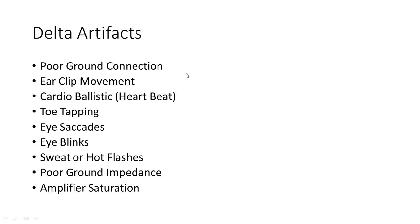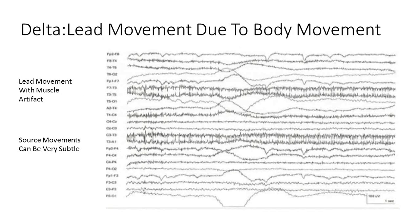Delta artifacts usually come from poor ground connections, ear clip movement, heartbeat or cardioballistic, toe tapping which is very insidious, eye saccades, eye blinks, sweat or hot flashes, poor ground impedance, and amplifier saturation. We're going to go over each of these so you can see what they look like.